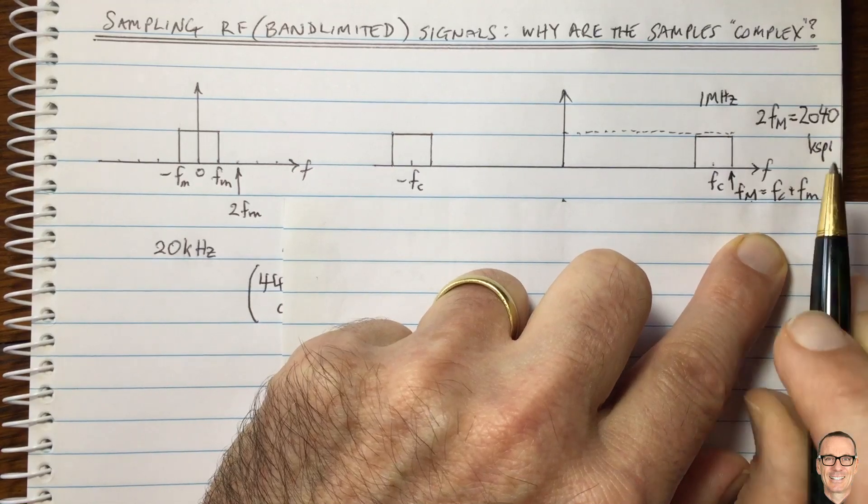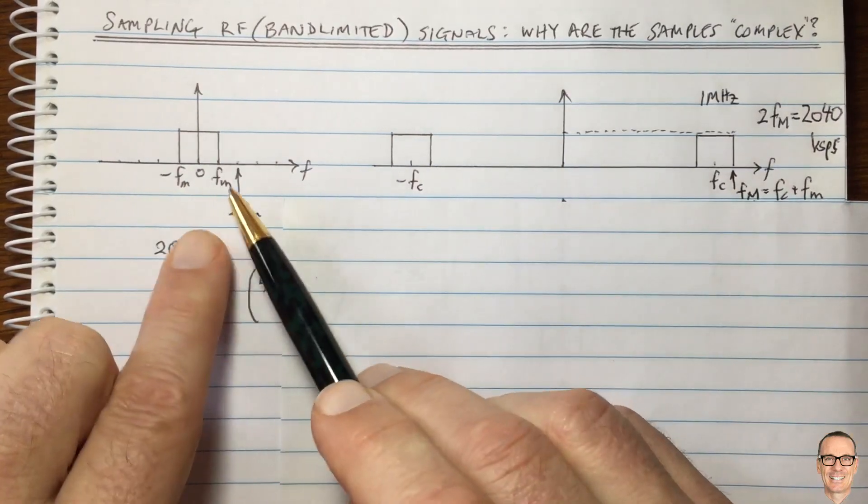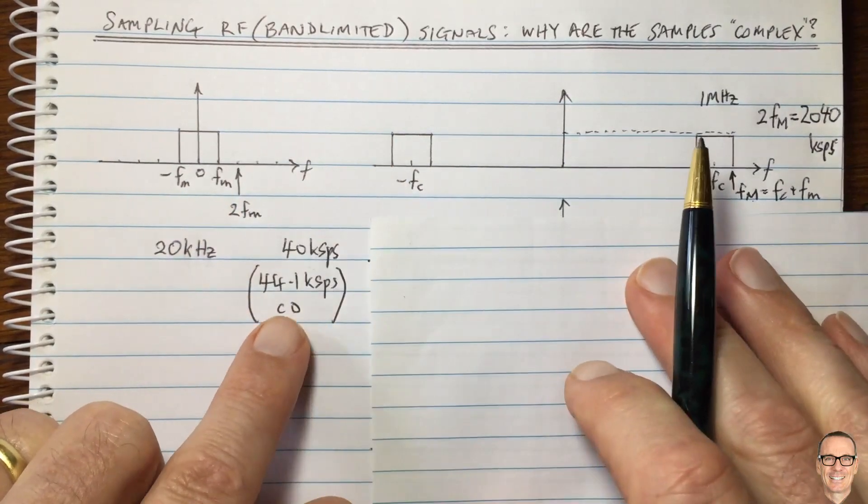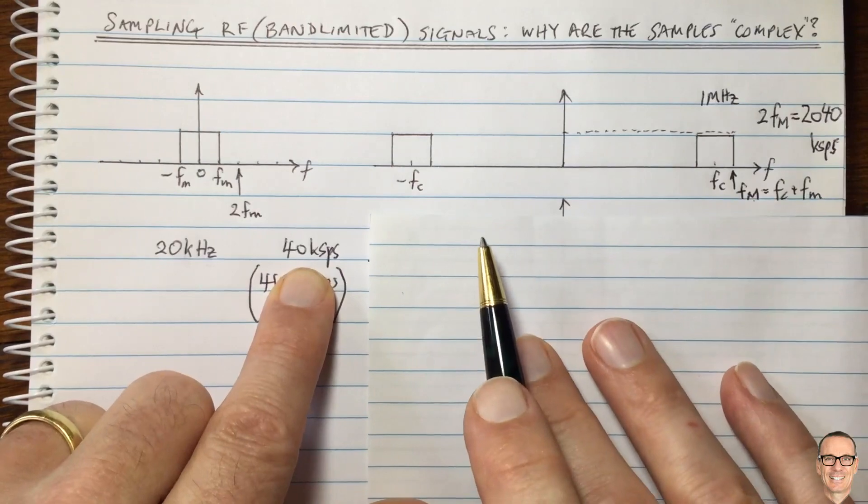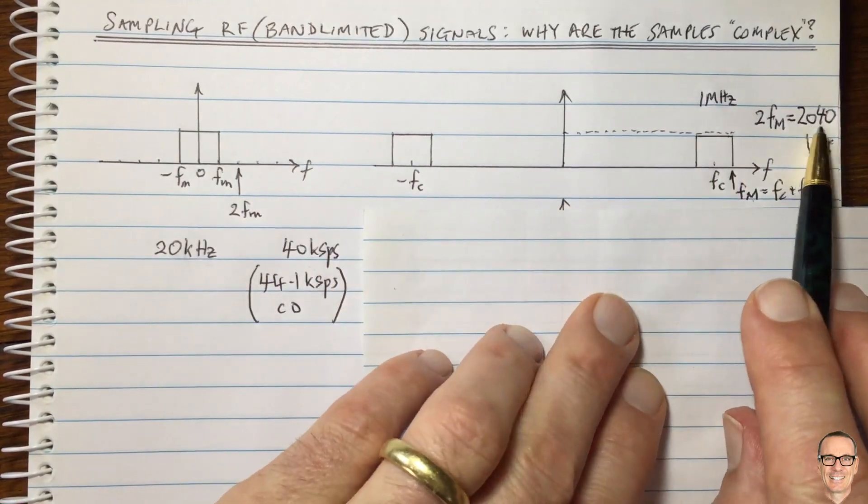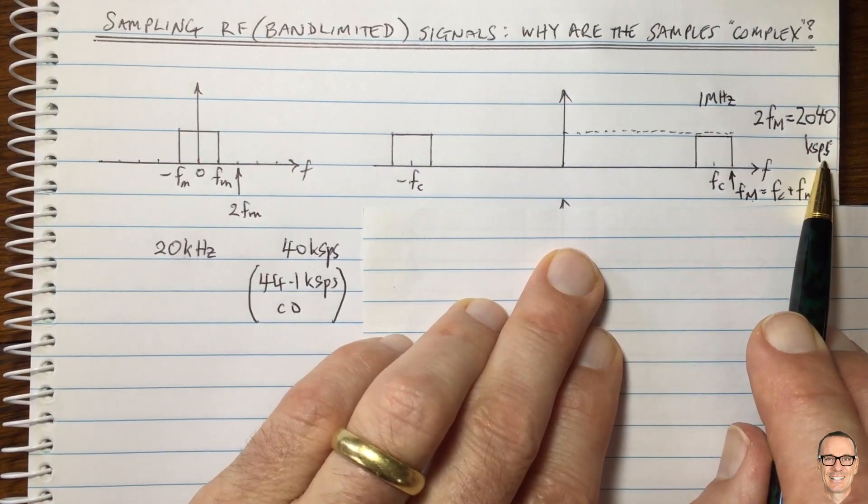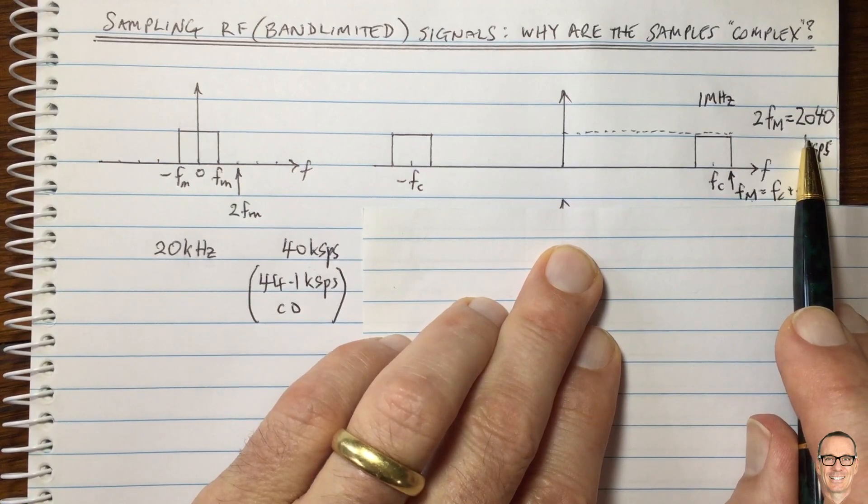So over here for the baseband signal, we had 40 kilo samples per second. And if we were to do the same sort of approach to the RF signal, we would have to sample at 2,040 kilo samples per second. And that is a very high sampling rate.